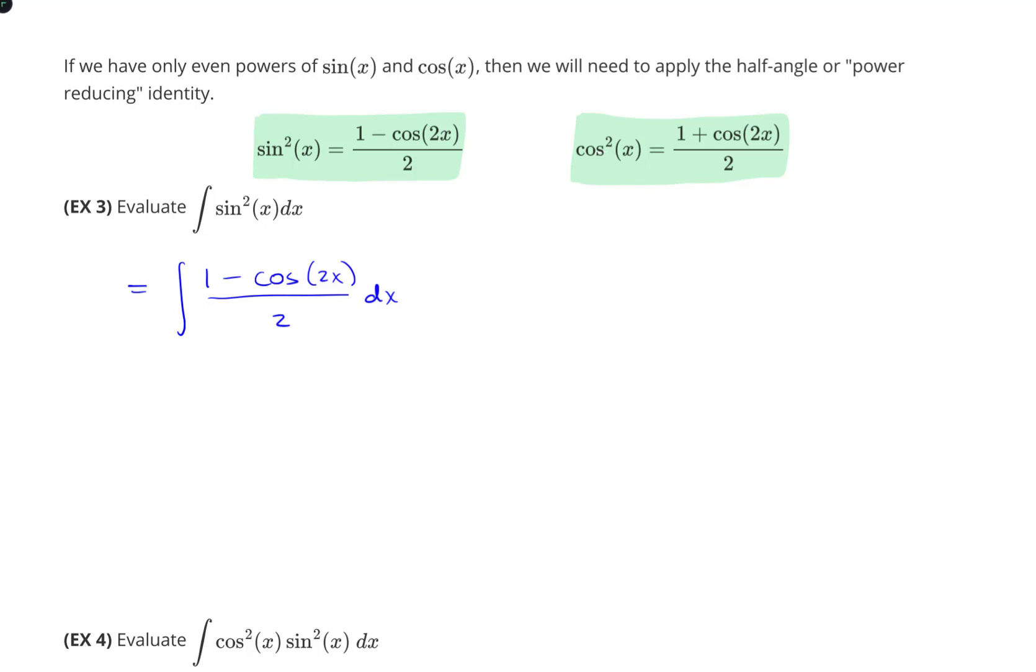One half is just a constant which can be pulled out of the integral altogether, leaving us with 1 minus cosine 2x dx. When I integrate here, I'm going to end up with 1 half times the integral of 1, which is just x, and the integral of cosine 2x.